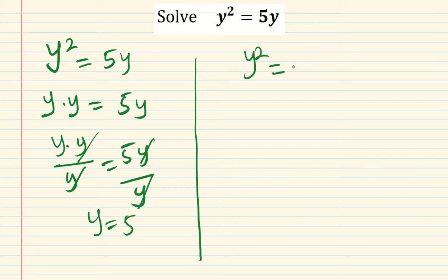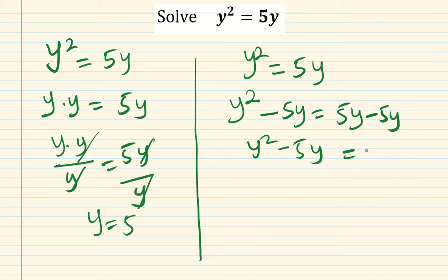So what we will do is: we have y² = 5y, then subtract 5y from both sides. So we have y² - 5y = 5y - 5y.